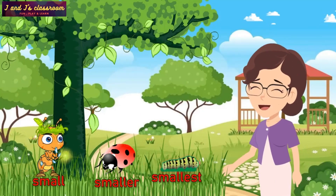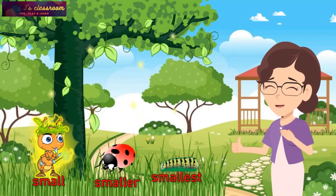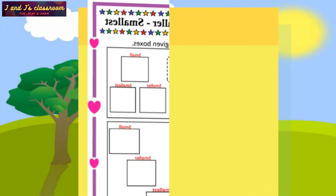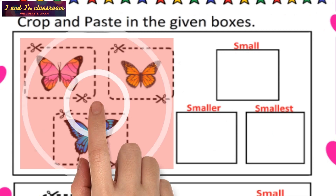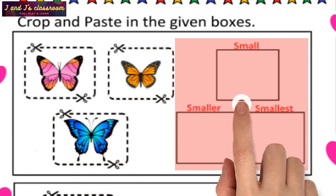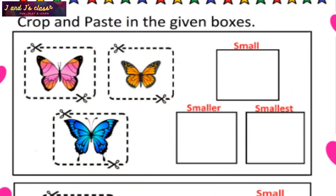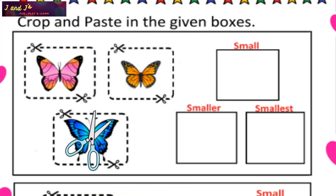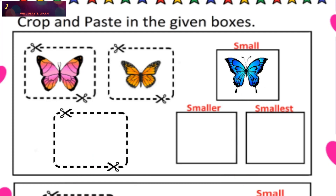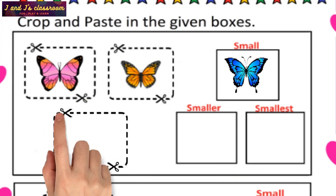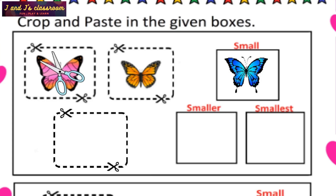Smallest — oh yeah, you're right! Now let me complete this worksheet also. Crop and paste in the given boxes. See the first question: there are three butterflies and three boxes.